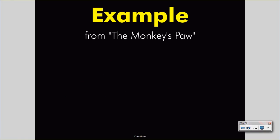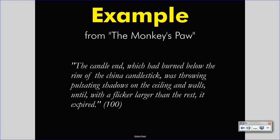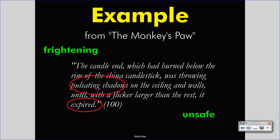Let's move further into The Monkey's Paw for one more example from page 100. This describes the interior of the house nearing the climax of the story: "The candle end, which had burned below the rim of the china candlestick, was throwing pulsating shadows on the ceiling and walls until, with a flicker larger than the rest, it expired." We should draw our attention to the pulsating shadows and the expiration of the candle. This helps us see the darkness within the environment and feel a bit frightened and unsafe. The discomfort developed earlier in the story escalates to fear and threat at this point, and that fear and threat is conveyed through the imagery.